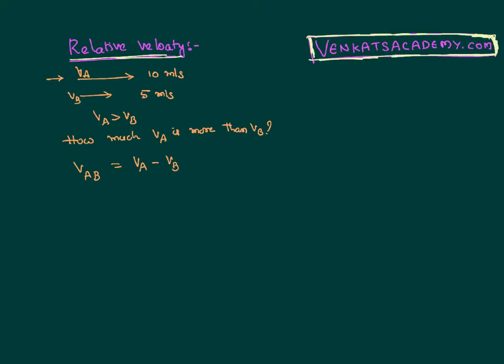That means if the two bodies are moving in the same direction, we can calculate the relative velocity by subtracting them. If you want VB with respect to A, velocity of the B with respect to A, that will become VB minus VA automatically.